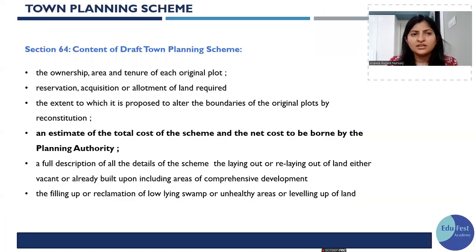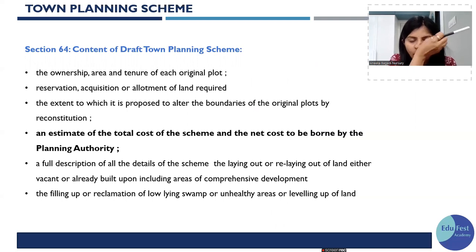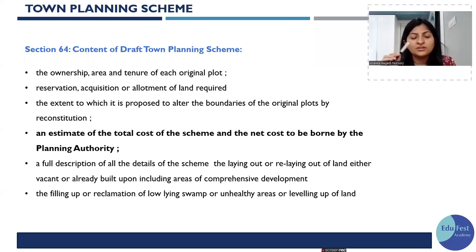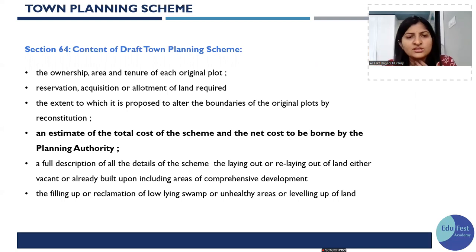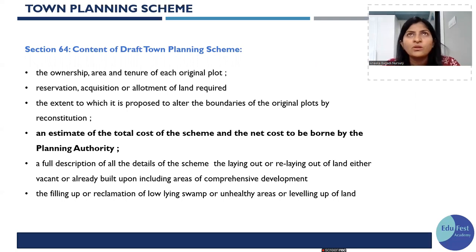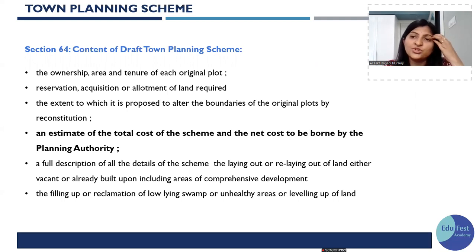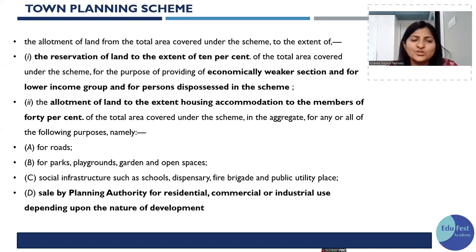Moving to the contents of the draft TP scheme: it must describe ownership, area, tenure, how much land is to be returned, original boundaries, expected cost, net cost borne by the planning authority, and total cost of the scheme — all of this must be described in the draft TP scheme itself.